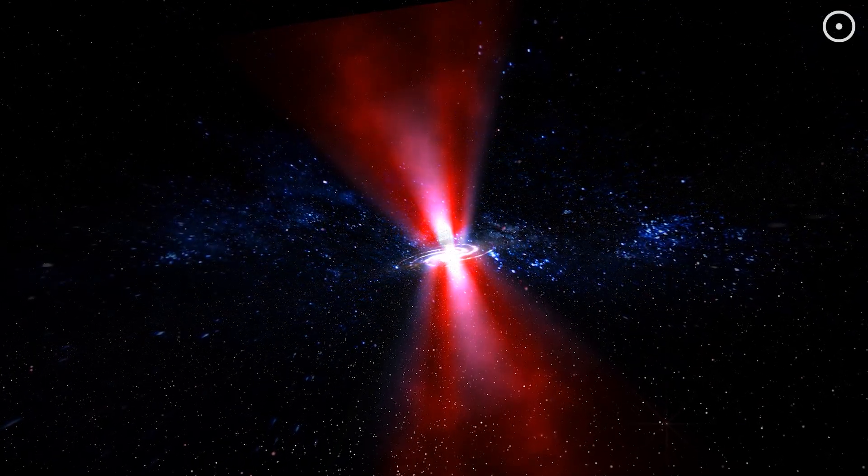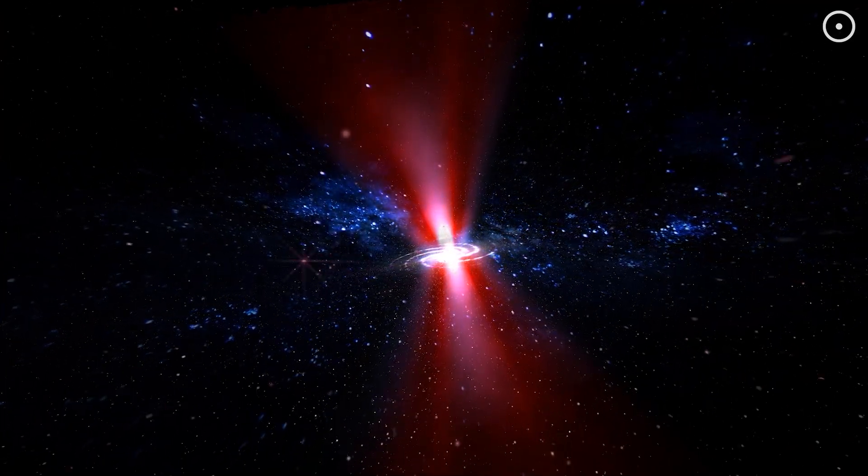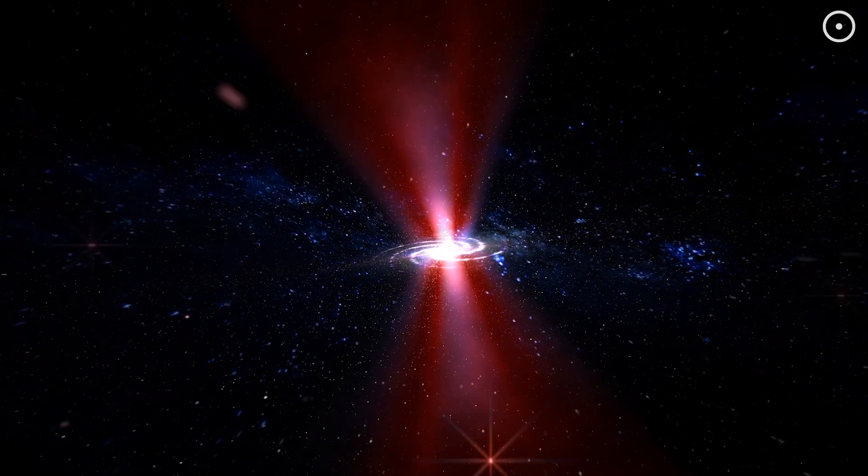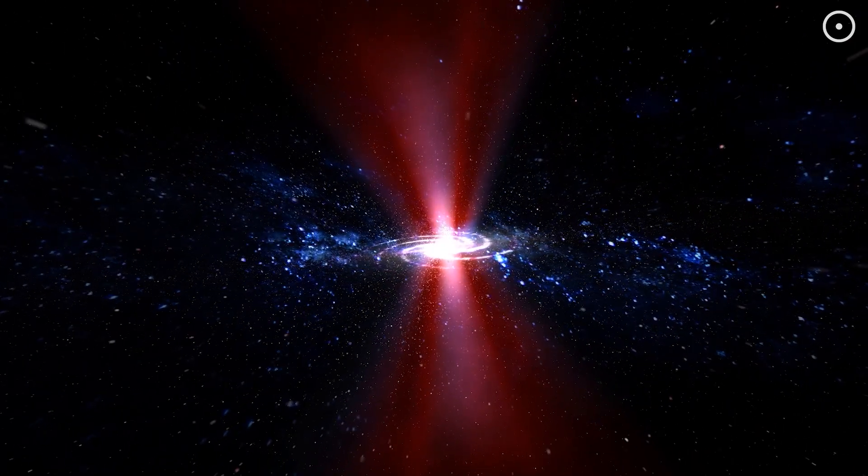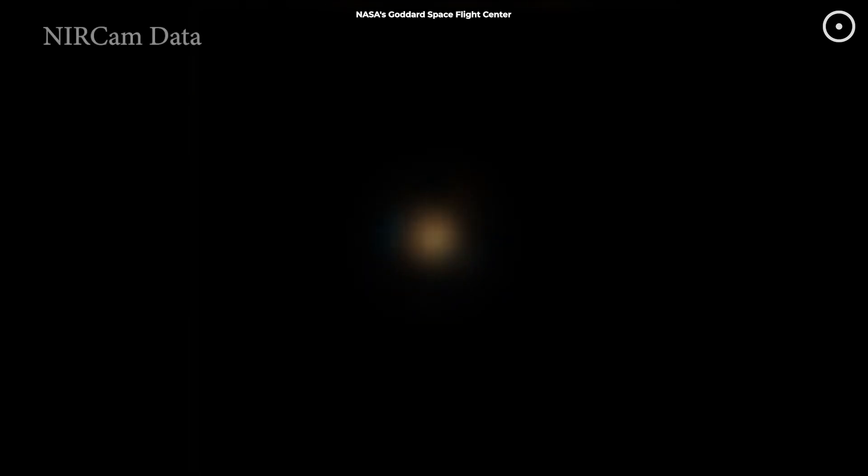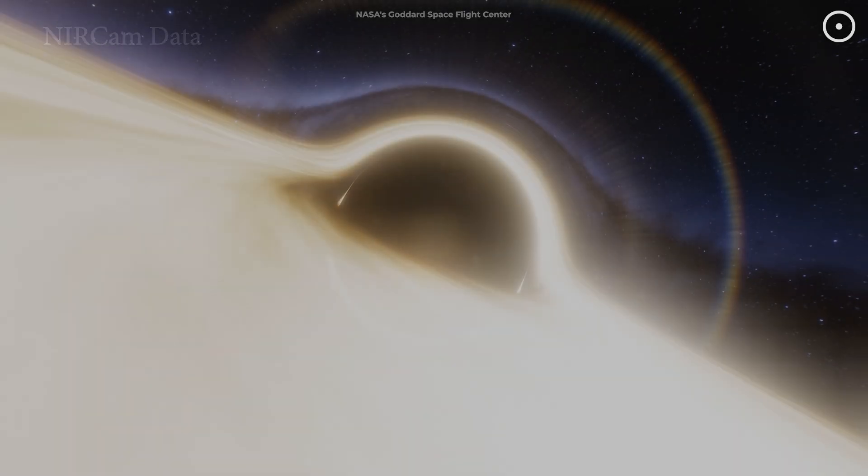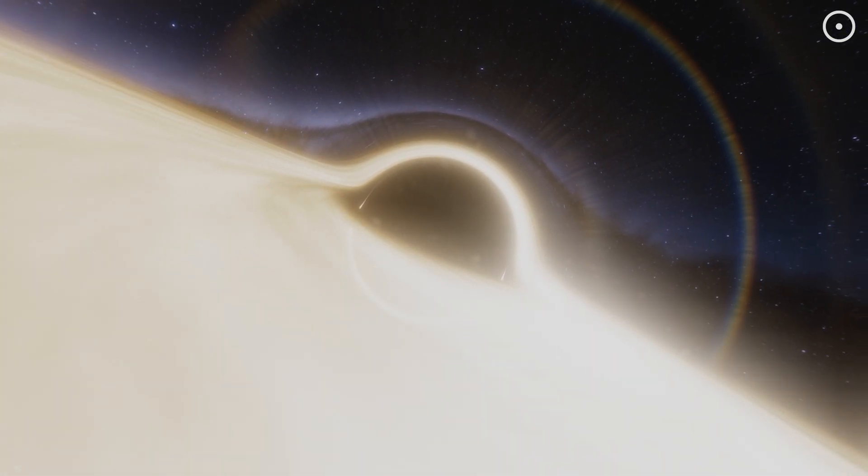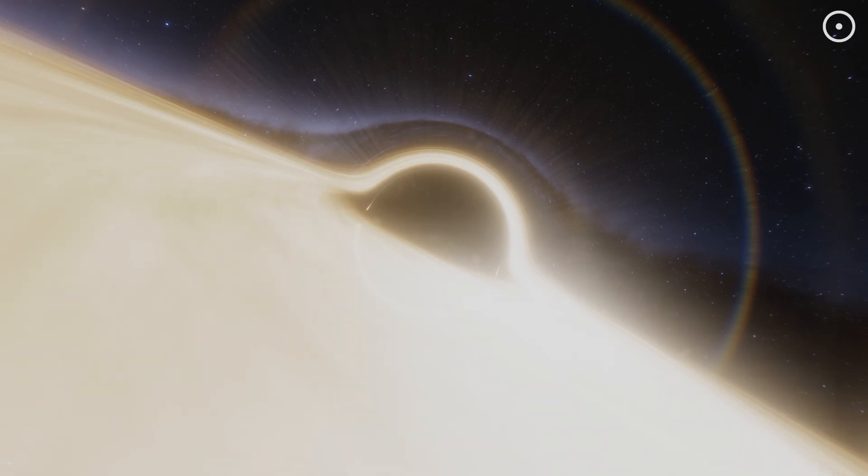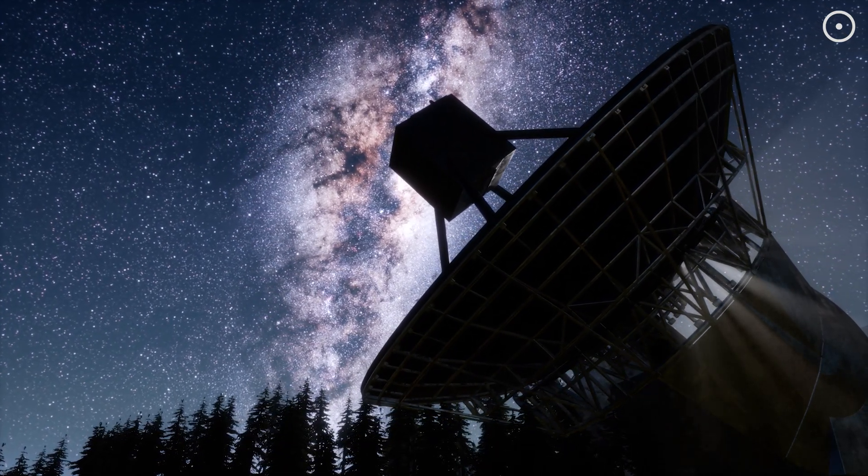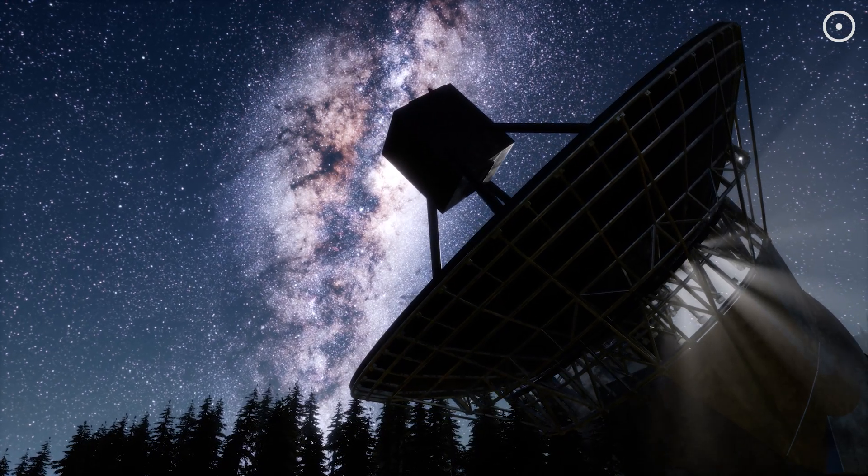Every massive galaxy we've ever found has a supermassive black hole at its center. They're like the engines of the cosmos, but we've never fully understood how they helped shape the galaxies around them. These cosmic light shows we're seeing aren't just pretty fireworks—they're telling us how black holes interact with their surroundings, how they feed, and how they influence everything around them.